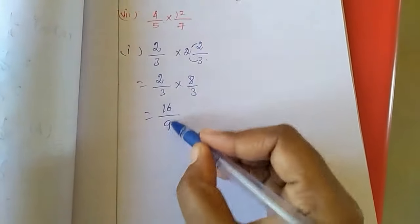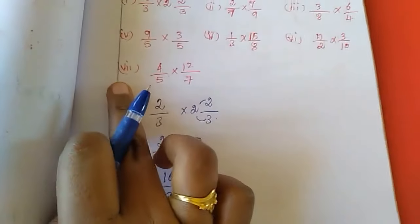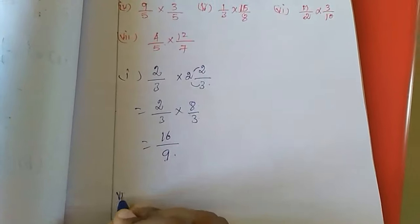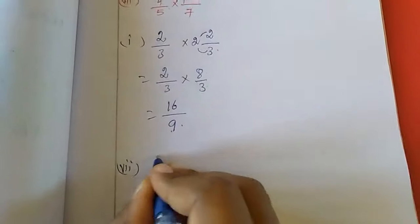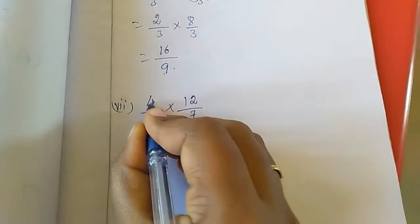For this two, it will not come in one table, so we cannot cancel this. Now we will move to the last sum, last sum is 7th sum. See here, 4/5 into 12/7. This is the 7th sum.